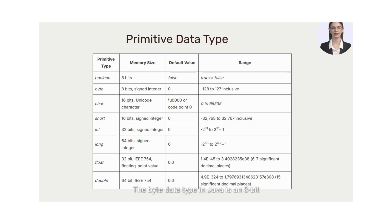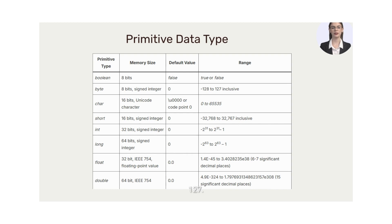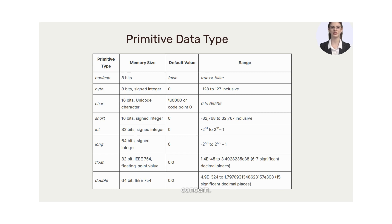The byte data type in Java is an 8-bit signed two's complement integer. It can store values ranging from -128 to 127. Bytes are commonly used when working with raw binary data or when memory efficiency is a concern.